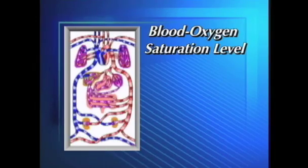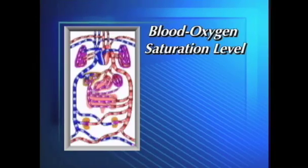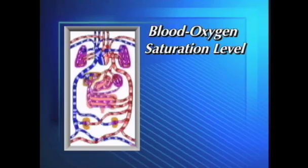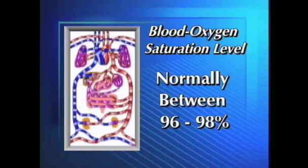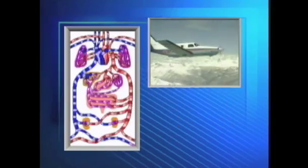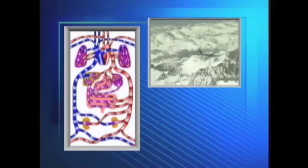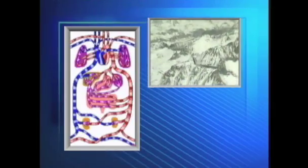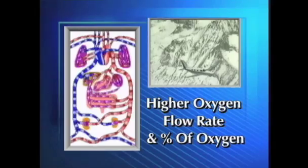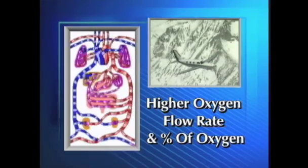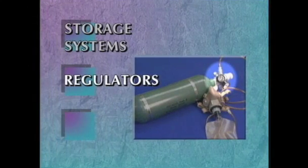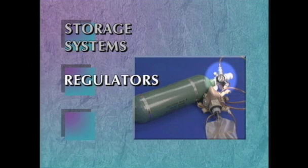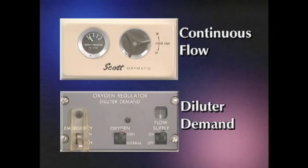The body's blood oxygen saturation level — the capacity of the blood to transport oxygen — is normally between 96 and 98 percent. To maintain this level as you ascend to altitude, your body must receive a correspondingly higher oxygen flow rate and percentage of oxygen. Regulators help in determining the proper oxygen flow, and most types fall into one of two categories: continuous flow or diluter demand.